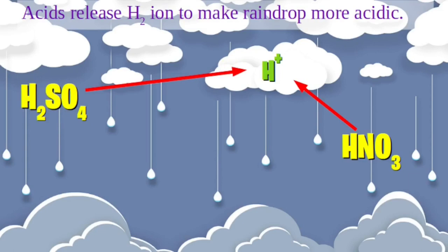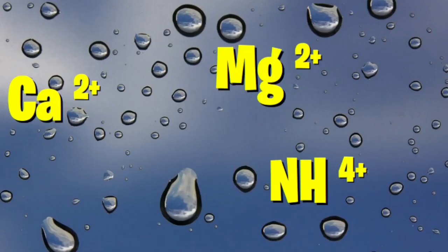Generally, sulphuric acid forms a major fraction of acid rain, followed by nitric acid and a very small fraction of other acids. However, in urban areas, calcium, magnesium and ammonium ions help to neutralize the raindrops, shifting the overall H+ towards the basic scale. The overall pH of any raindrop is due to the net effect of carbonic acid, sulphuric acid, nitric acid and other acidic constituents, or any neutralizers such as ammonia.